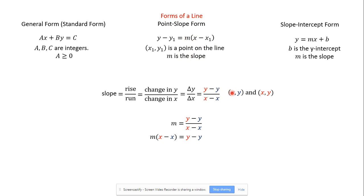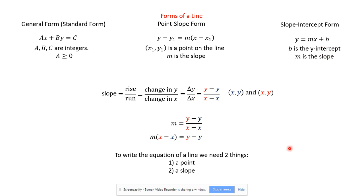To write the equation of a line, we need two things: a point and a slope. It may give us a point and the slope directly, or a slope and a y-intercept, or two points. If it gives us two points, we find the slope using those two points. It might give us a table with a bunch of points — that's the same as two points; we just get to pick which two we want to use.